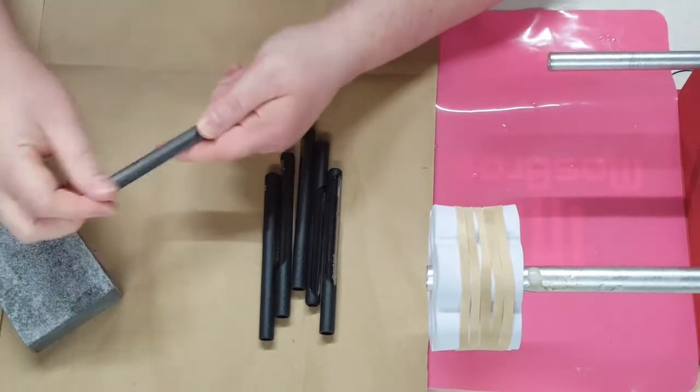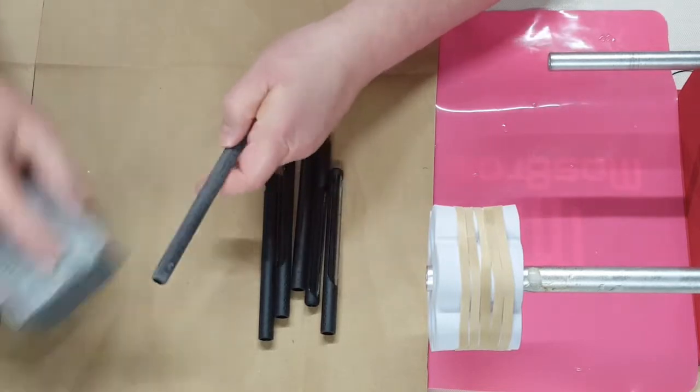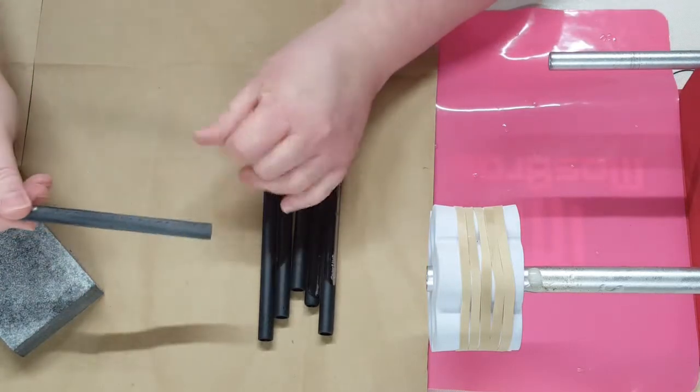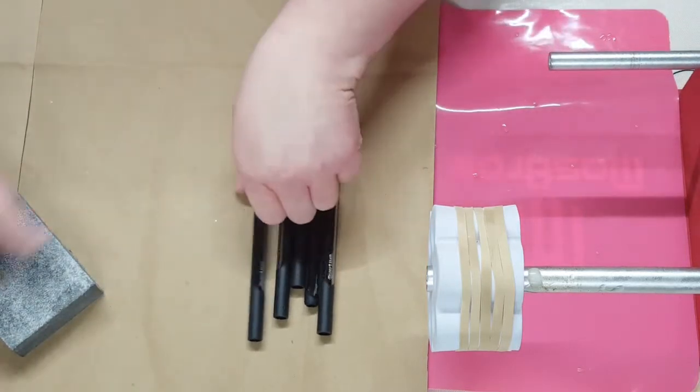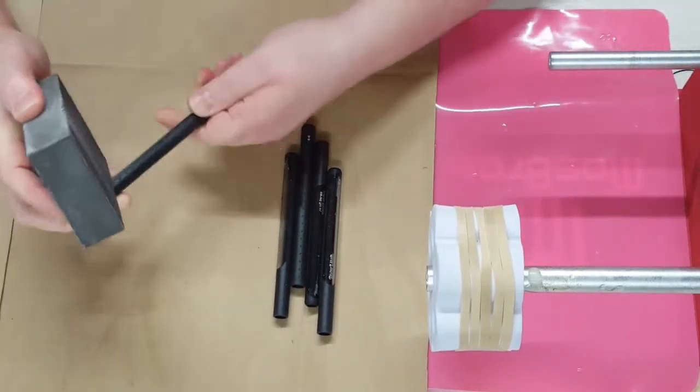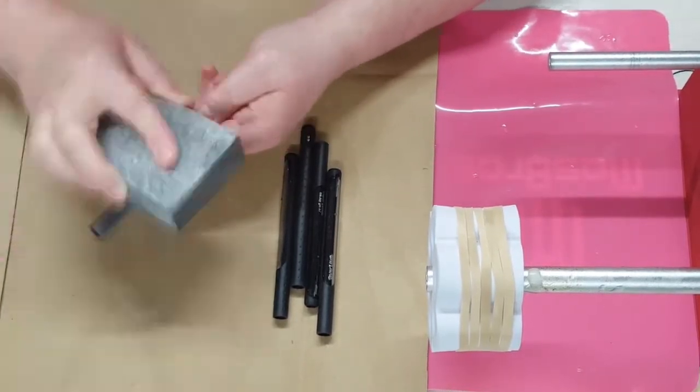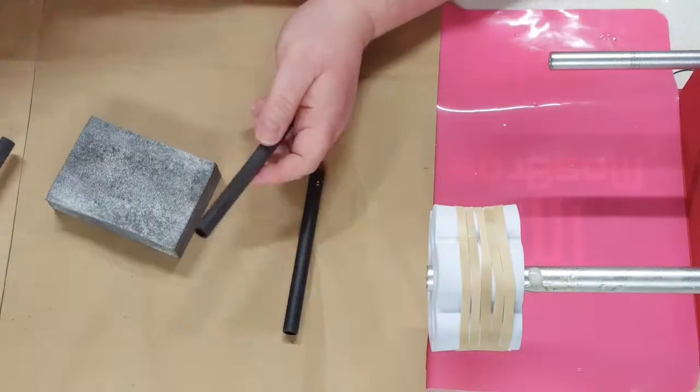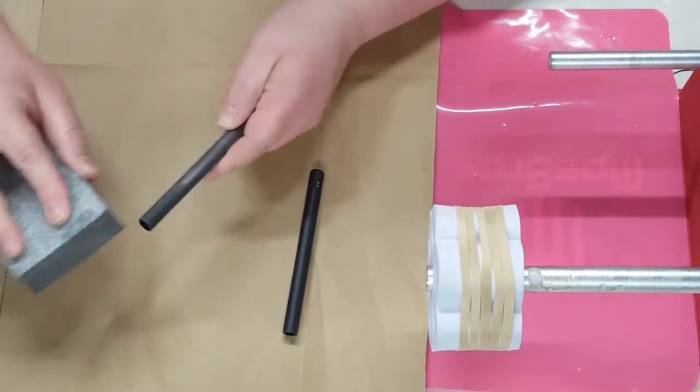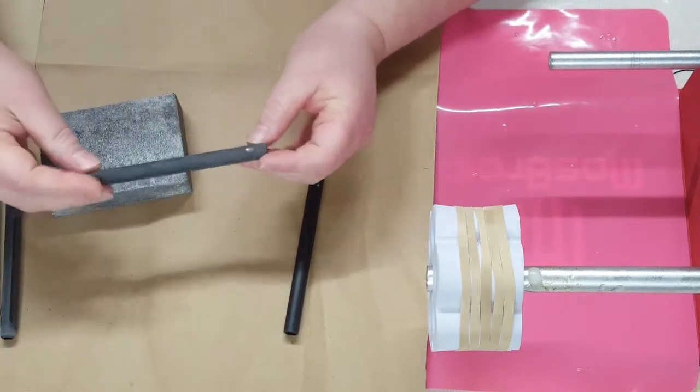And I'll make sure that little nubby thing there, I'll make sure to sand the rest of that down to kind of get it flush with the rest of my pen. Now you don't have to do, like I'm using the paper mate gel pens. You don't have to use those. You can really use any pen that you can take apart will work.